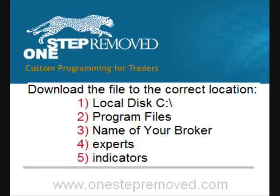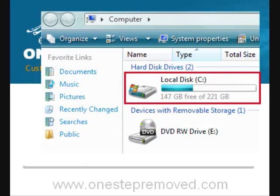So you know in advance where we're going, the entire hierarchy of where to save the indicator file is: C drive, Program Files, name of your broker, Experts, and then Indicators. We'll go through this step by step so you can visualize the process.